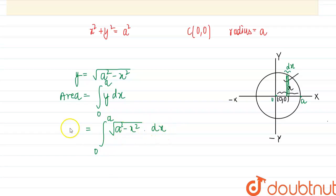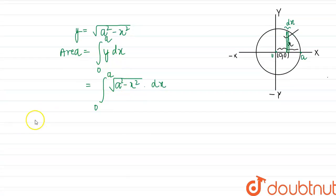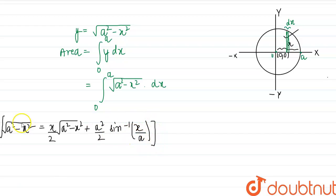And this is the standard integral √(a² - x²). The integral of this is given by the formula: (x/2)√(a² - x²) + (a²/2)sin⁻¹(x/a). So this is the integral. Now we can apply this over here.